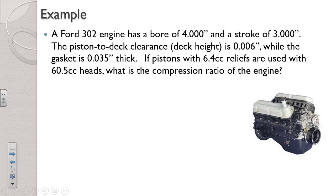Let's continue by looking at some trickier examples where we have more computation to do. A typical Ford 302 engine — one of the most common engines on earth — has a bore of 4 inches, a stroke of 3 inches, a piston to deck clearance of six thousandths of an inch, and the gasket is 35 thousandths of an inch thick. The pistons have 6.4 cc's and the cylinder heads have 60.5 cc combustion chambers. Let's figure out the compression ratio.